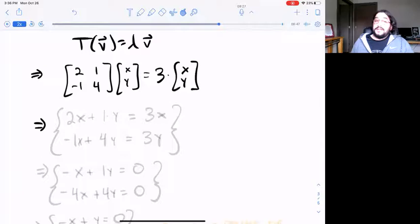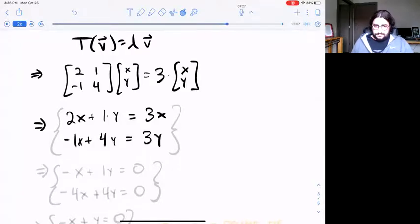If you expand out the matrix multiplication and the scalar multiplication, equate the x coordinates to get one equation, equate the y coordinates to get the other equation. Now we have a system of two equations and two unknowns.